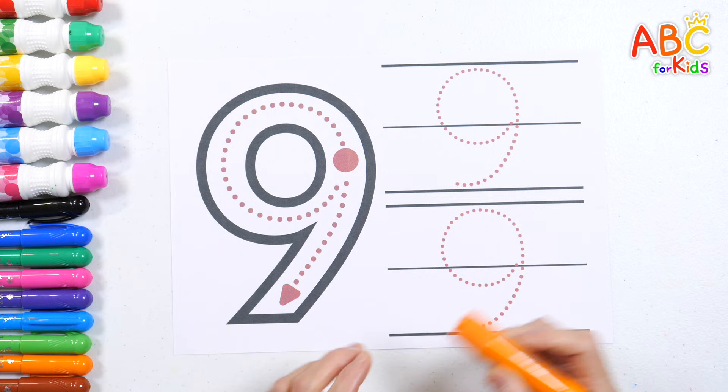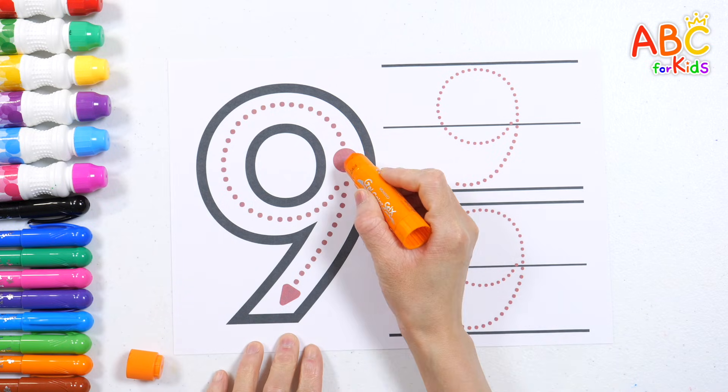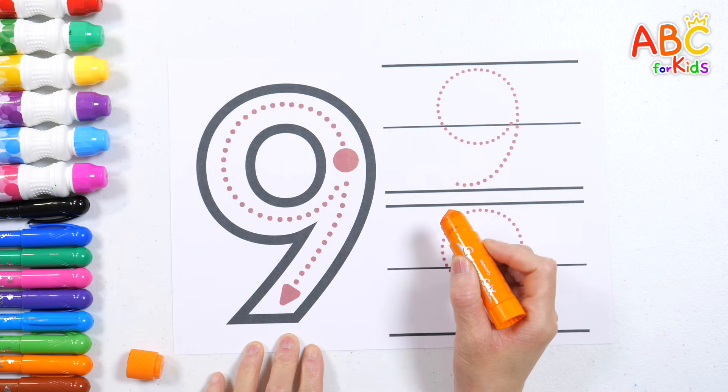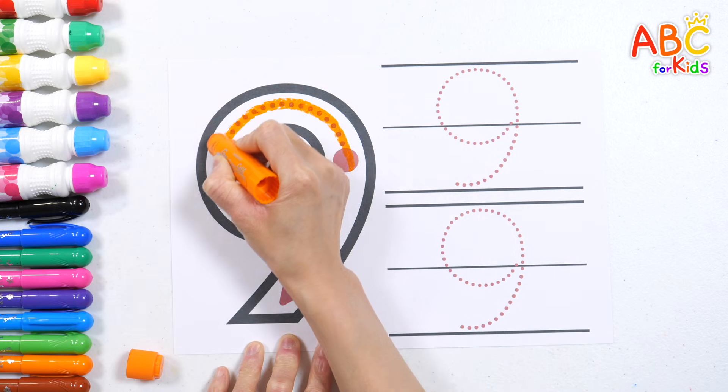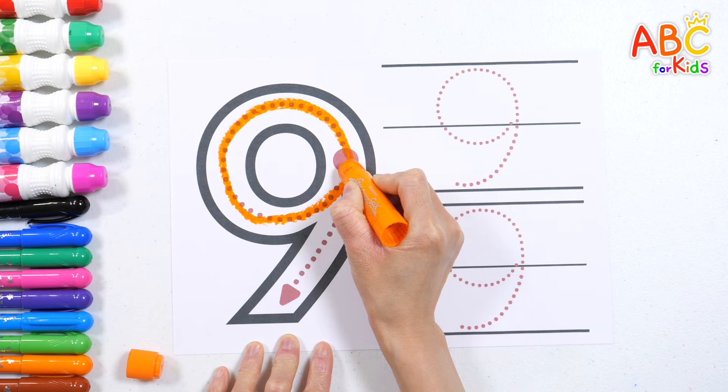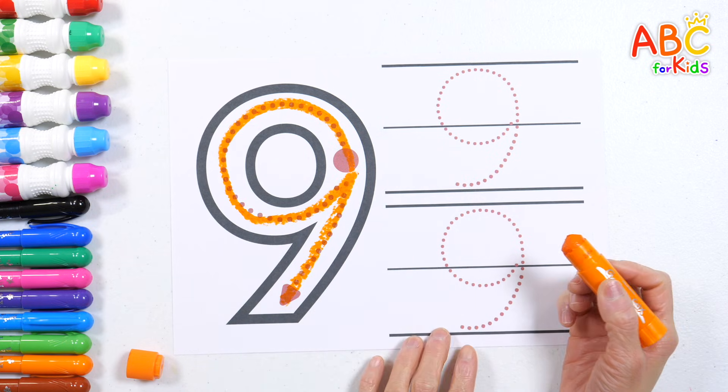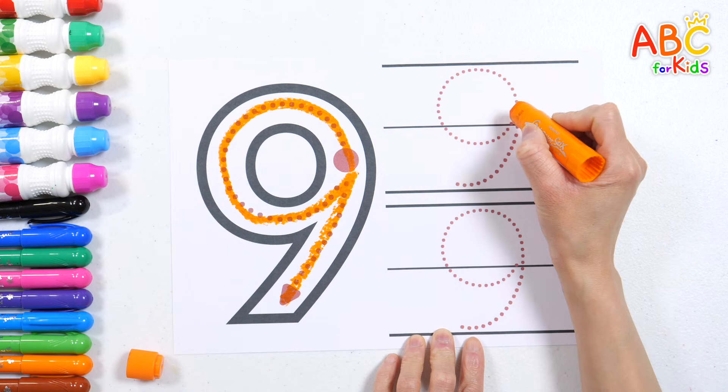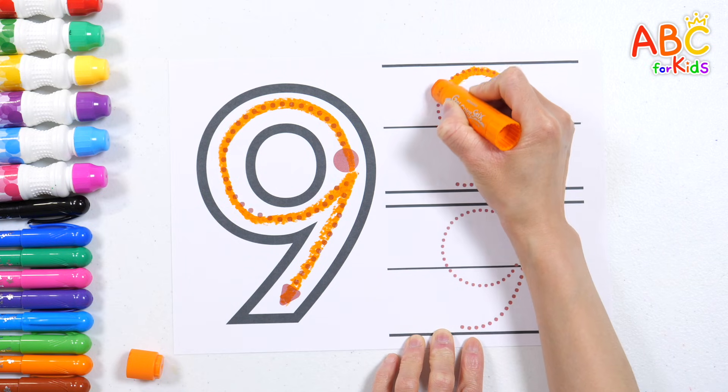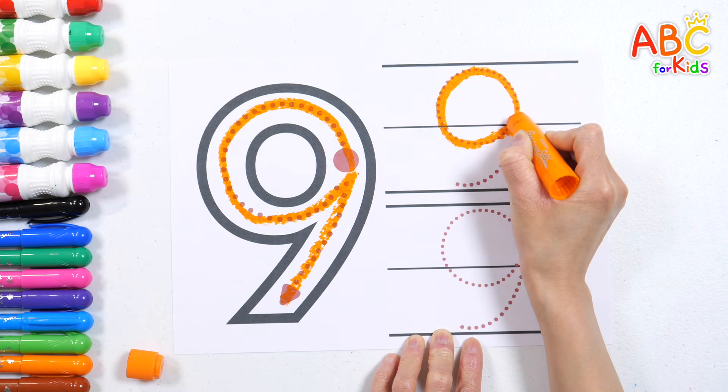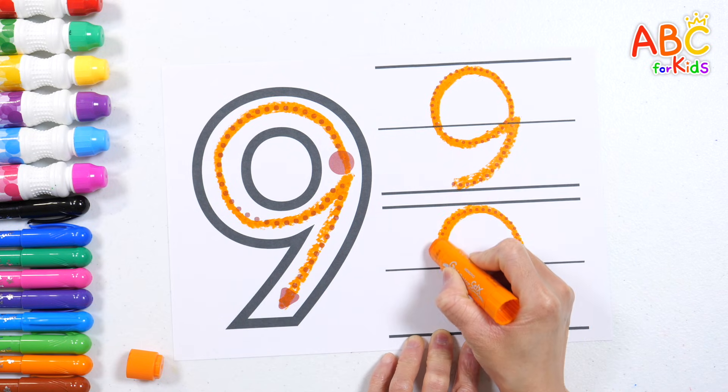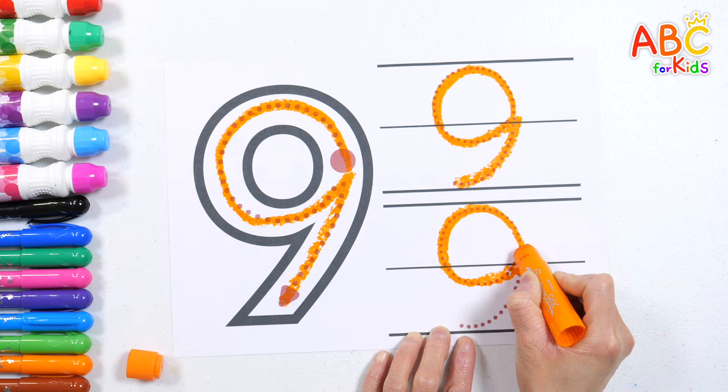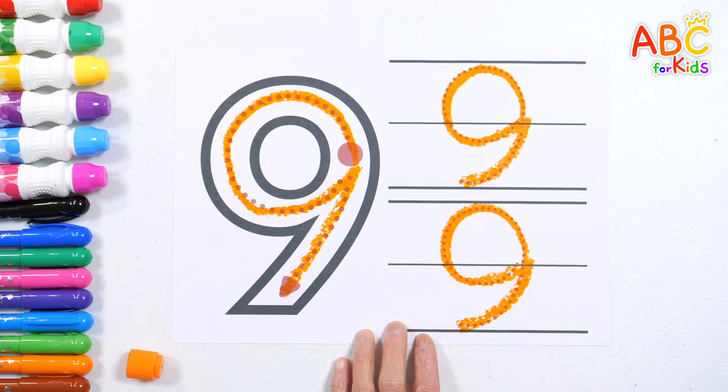Let's learn how to write the number nine. Start with a circle and follow the dotted line slowly down. Nine. Great! Let's try writing it two more times. Nine. Well done!